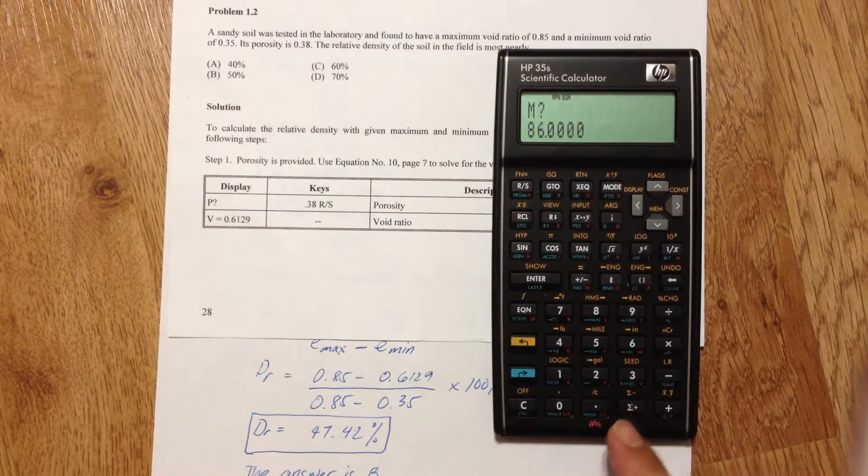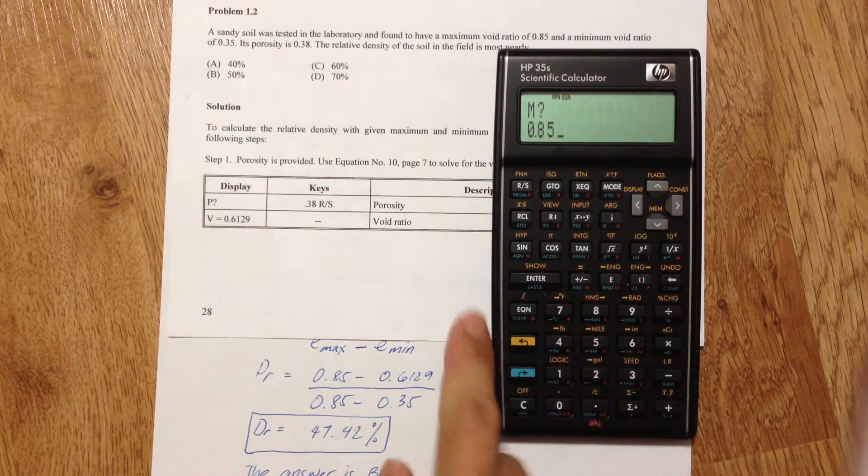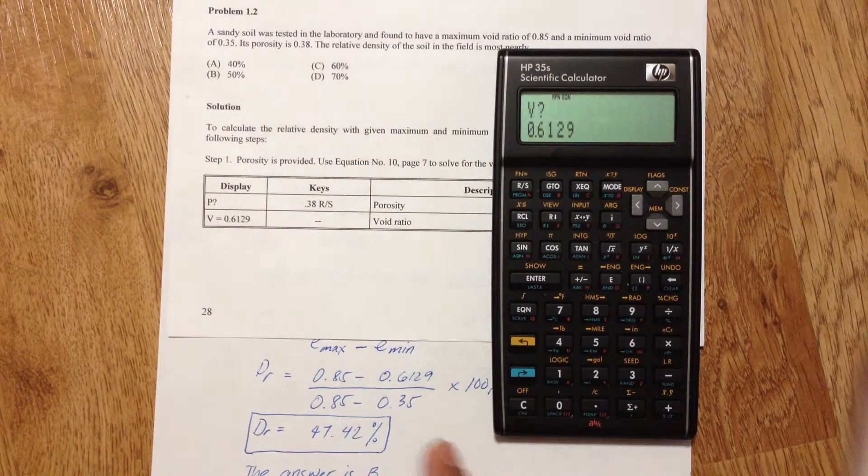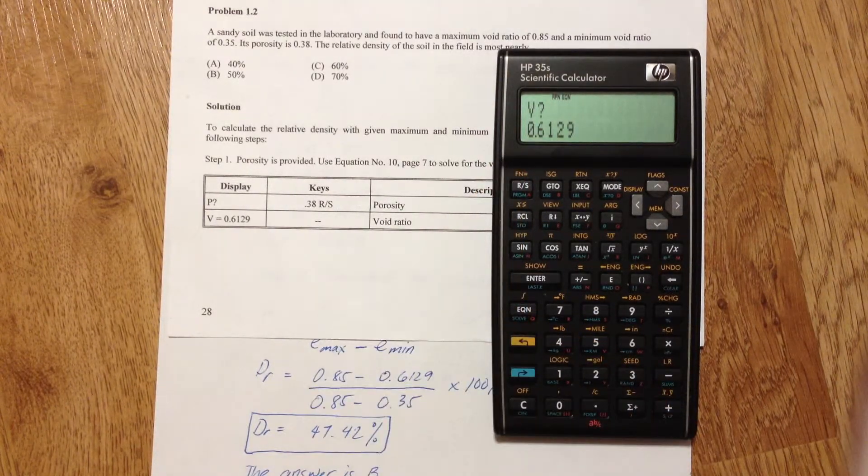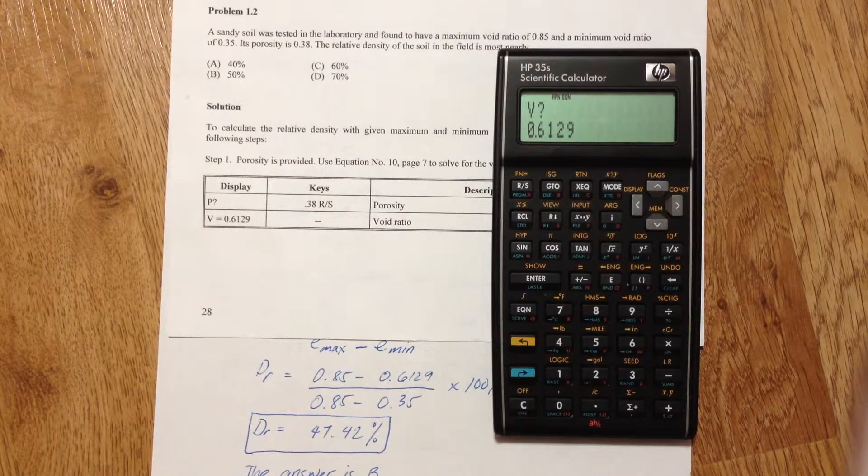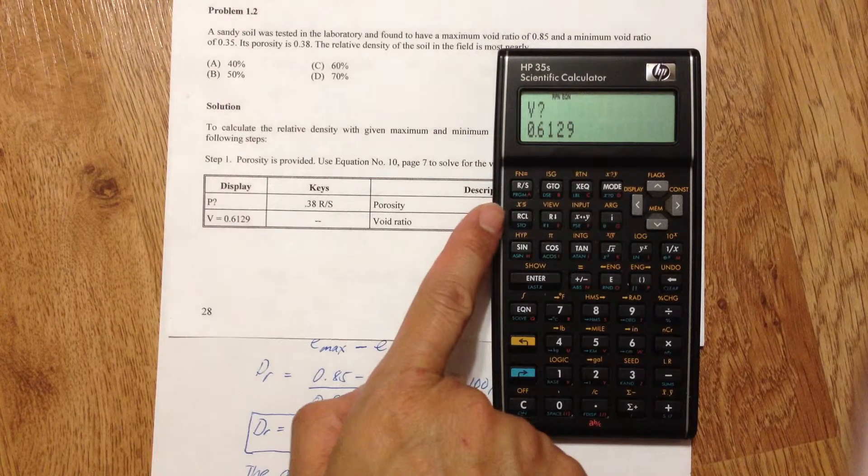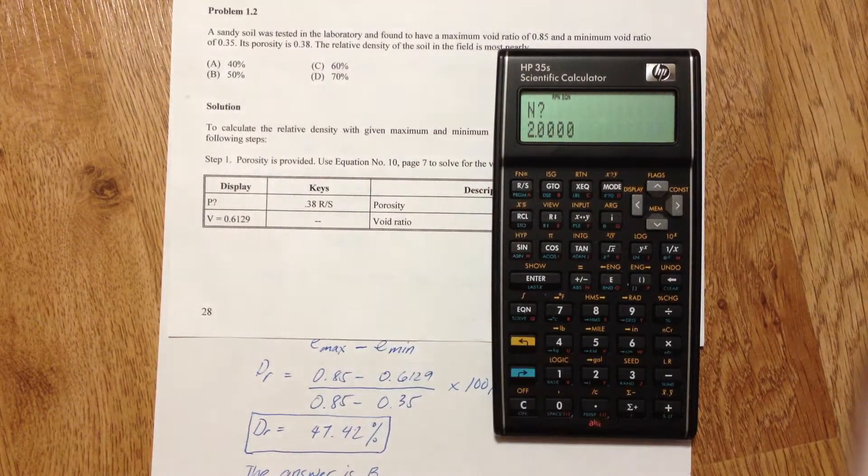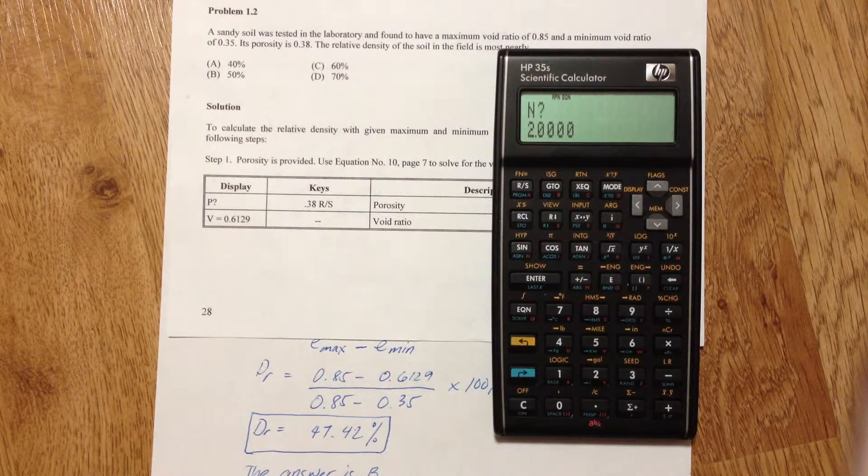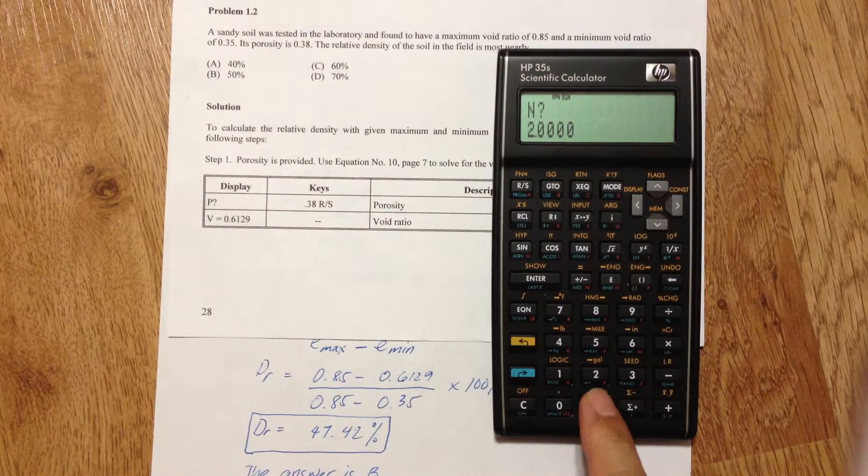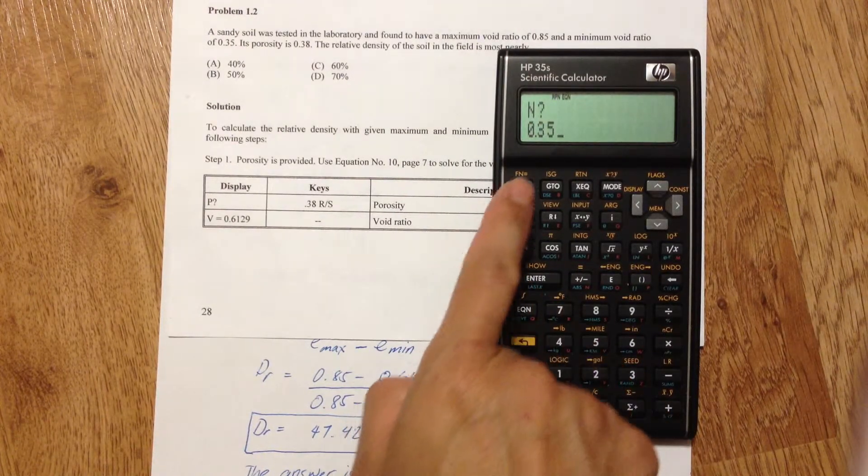M for maximum void ratio of 0.85 RS. Void ratio is already there from the previous calculation 0.6129 so just accept it by pressing RS. N is the minimum void ratio of 0.35 RS.